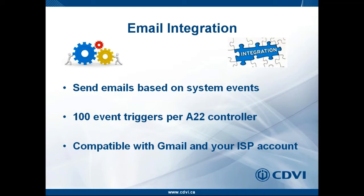You can have up to 100 different triggers per controller. In a system with several controllers each having expanders, each controller connected to the network can be set to send an email, and each one can have up to 100 different events as a trigger. When something happens on a controller or its expanders, it will send an email. This is compatible with Gmail, Yahoo, Windows Live, or your local ISP email account using SMTP settings and ports.